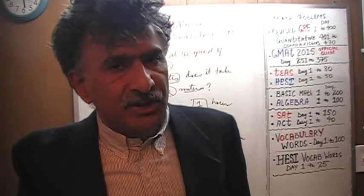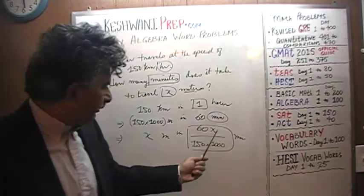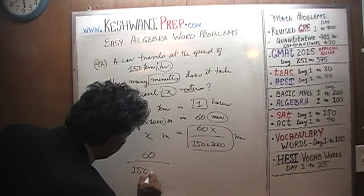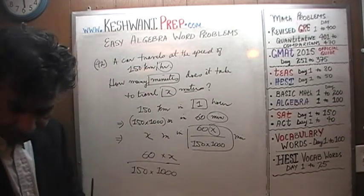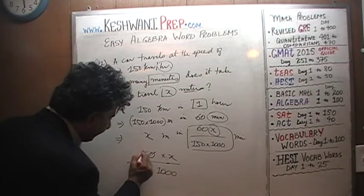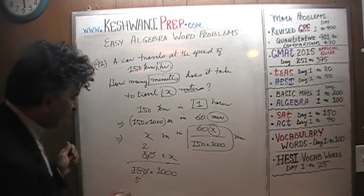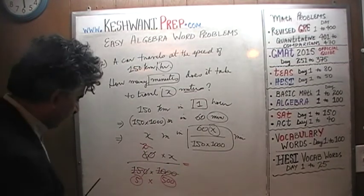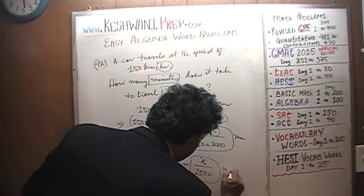Whether it's SAT, ACT, GRE, or otherwise — we have to simplify this. The numbers we're dealing with: 60 over 150 times 1,000, times X at the end. Divide top and bottom by 10 to knock out a zero, then divide by 3: 6 divided by 3 is 2, and 15 divided by 3 is 5. Then divide top and bottom by 2 — we end up with 500 times 5 at the bottom, which is 2,500. On the top there's just X — so it's X over 2,500 minutes.